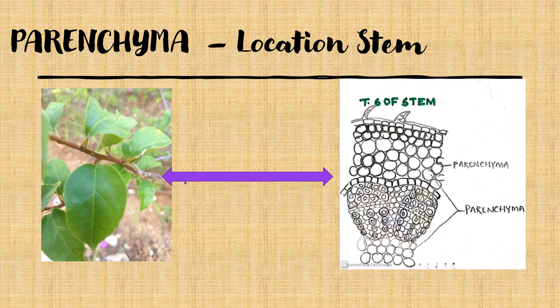Let us see where parenchyma is present in a plant body. In roots, stem, leaf, fruit, flowers, and seeds — any soft tissue is made up of parenchyma, so it is also called the filler tissue. If we take a transverse section of the stem, we can see that the cortex and the pith region of the stem are made up of parenchyma cells. The pulp part of the fruit and inside the seed also contain parenchyma cells.